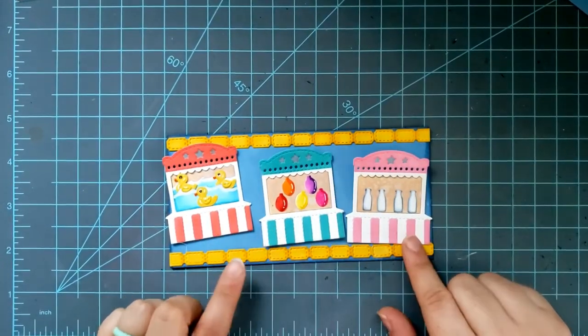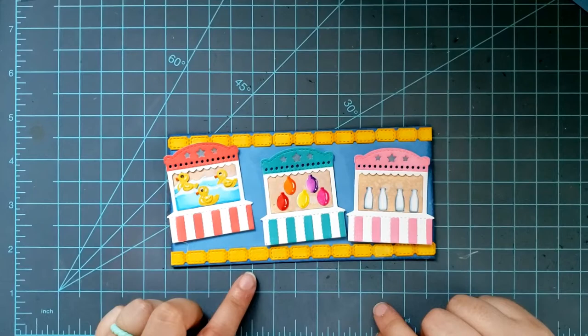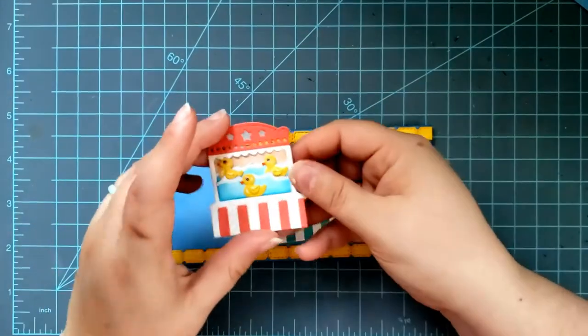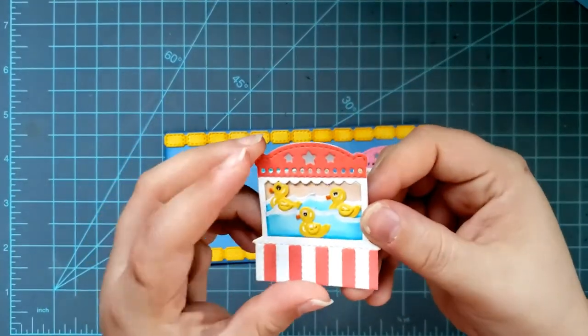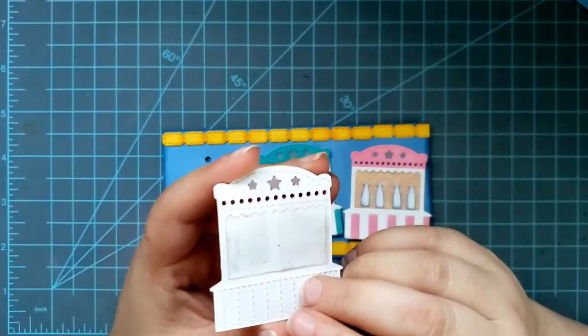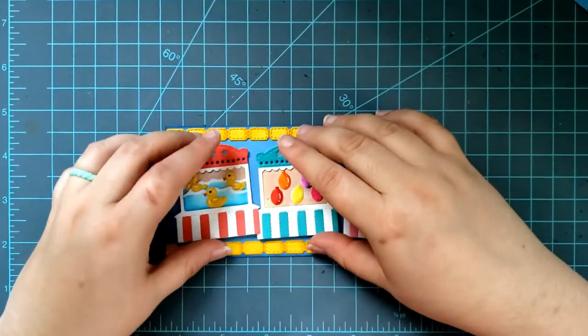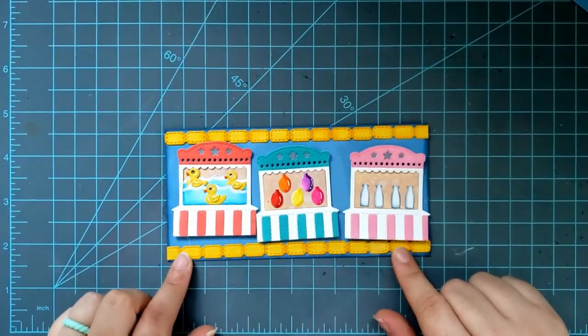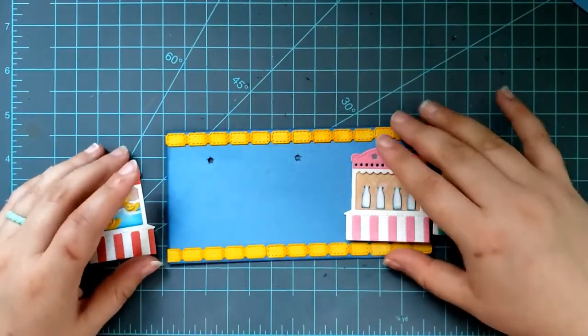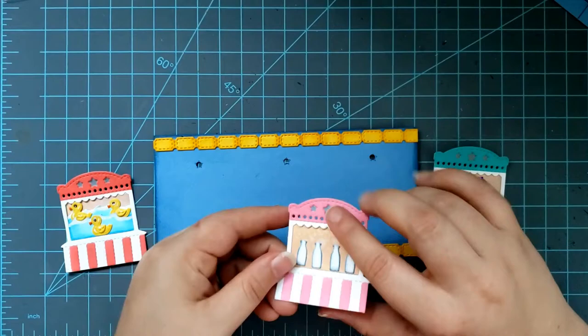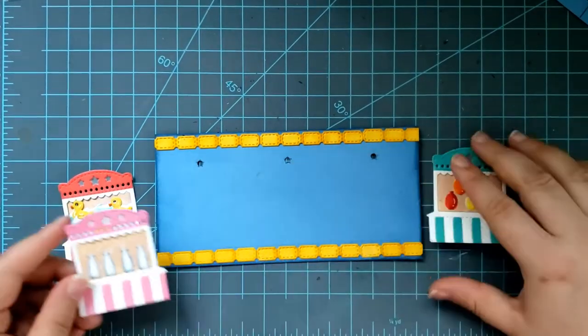I already went ahead and created these three game booths, and I used the stencil included in the set to ink up the game booths. I used some clear tape on the back side to tape the middle parts, the game parts, to the booth outline. And I also used the ticket die-cut to create a little fun border on the edge of our card.